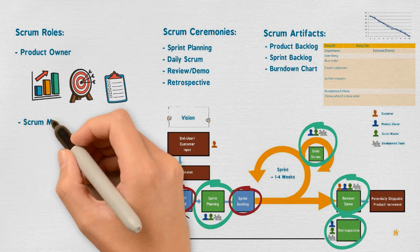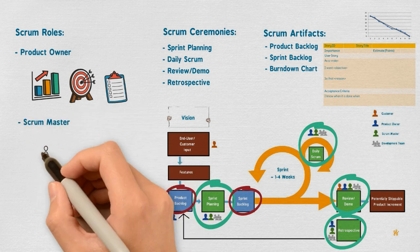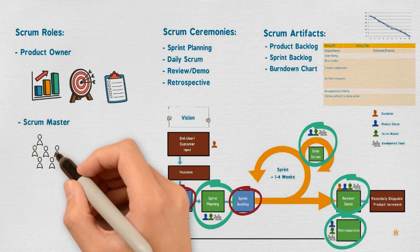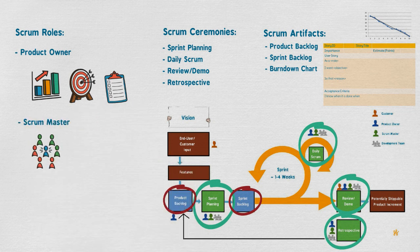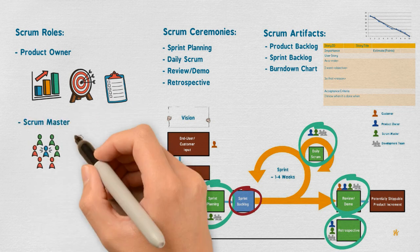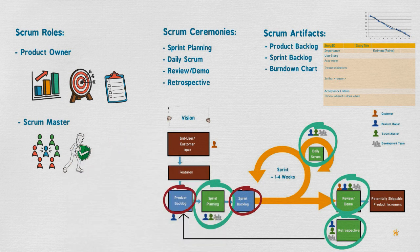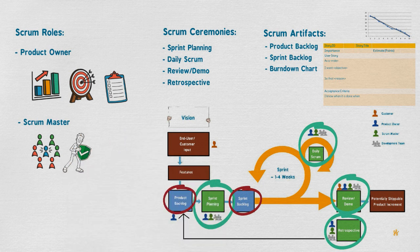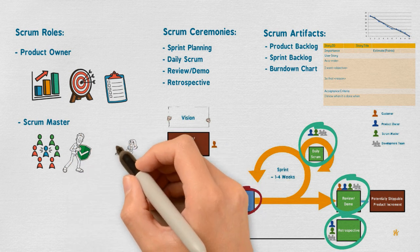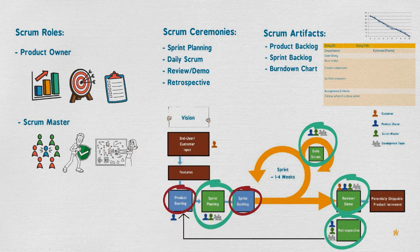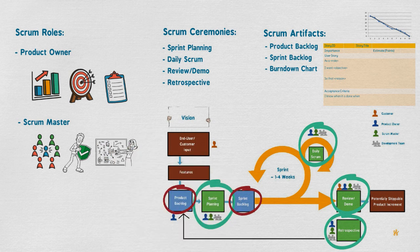The Scrum master helps the Scrum team to perform at their highest level, facilitates their work, and protects them from internal and external distraction. The Scrum master utilizes the servant leadership approach, which includes being the leader, coach, protector, defender, and facilitator.